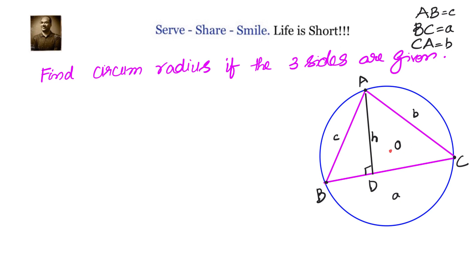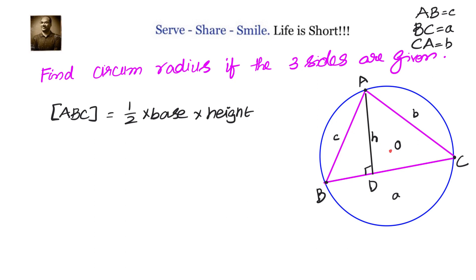Now we need to calculate the circumradius. OA is the circumradius. Let's extend AO to another point on the circle to get the diameter, dividing the circle into two semicircles. Let the point where it meets the circle be point E.